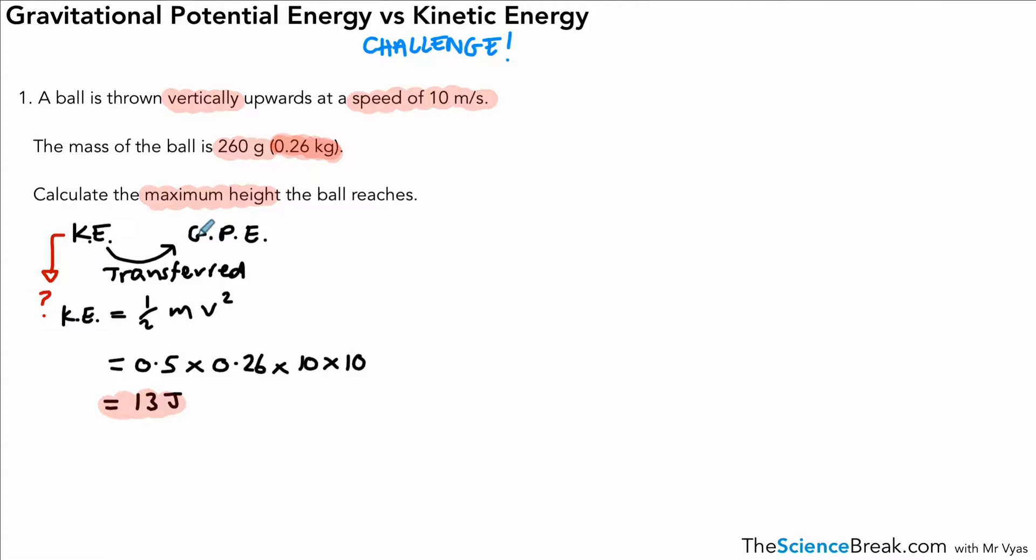So the kinetic energy with which the ball is thrown up is 13 joules, and that's transferred to gravitational potential energy. So we know at the maximum height the ball has 13 joules of gravitational potential energy. Our equation for gravitational potential energy—again, it's something we have to remember, we're not going to be given that in the exam—is mass times g times h.